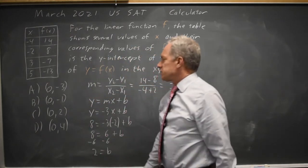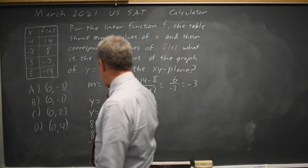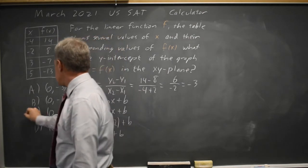The y-intercept has x-coordinate 0 always and the y-coordinate for this line is positive 2 so that is choice C.